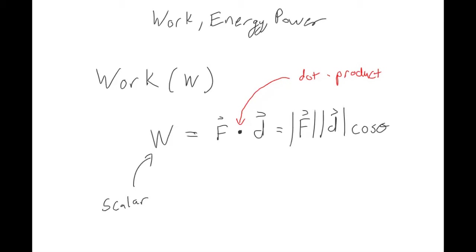Another way to think about the dot product is that you take two vectors as input and the output is a scalar term. Remember, a scalar doesn't have a direction associated with it, but vectors have a magnitude and a direction.